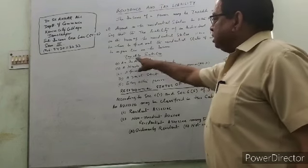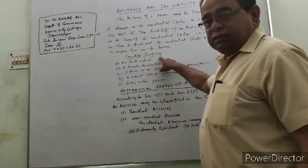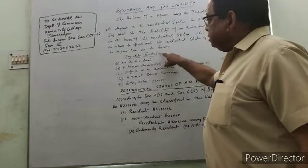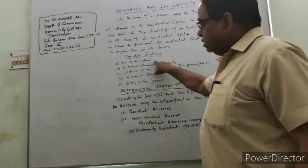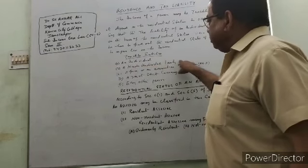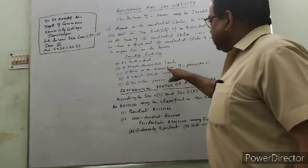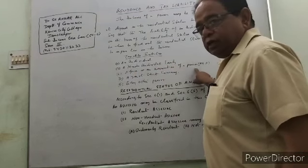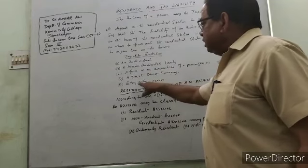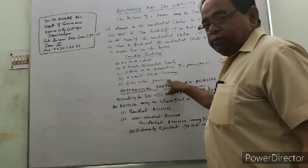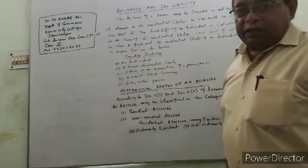First of all, I will tell you about the tax entities — who comes under this. Here, it has been divided into different categories: A, an individual; B, a Hindu undivided family; C, a firm or an association of persons (AOP); D, joint stock company; and E, every other person. So there are five categories: A, B, C, D, E.